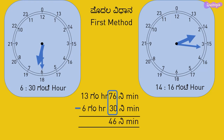Subtracting 6 hours from 13 hours, the difference will be 7 hours. Thus, the time duration will be 7 hours 46 minutes.